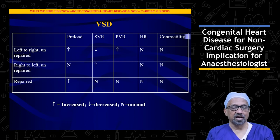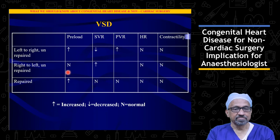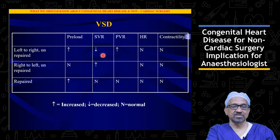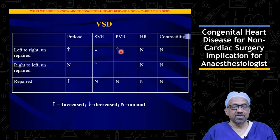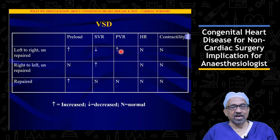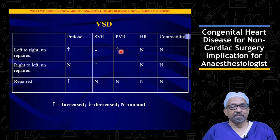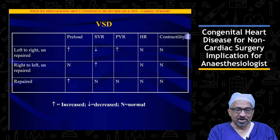In a patient coming for non-cardiac surgery with an unrepaired ventricular septal defect, preload is maintained or slightly increased, systemic vascular resistance is decreased, pulmonary vascular resistance is maintained, and heart rate and contractility are maintained. Pulmonary vascular resistance is not decreased because in patients with VSD with relatively normal pulmonary artery pressure, pulmonary vasodilation causes excess pulmonary flow leading to decreased systemic perfusion. However, if the patient has elevated pulmonary artery pressures, attempts can be made to decrease them by maintaining PaCO2 at about 30 mmHg, increasing PaO2, and using slight hyperventilation.